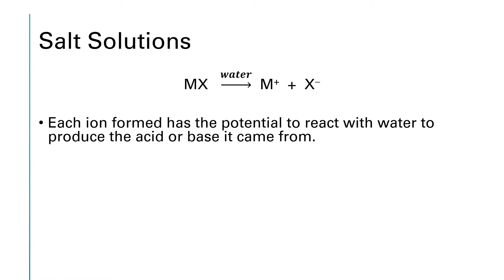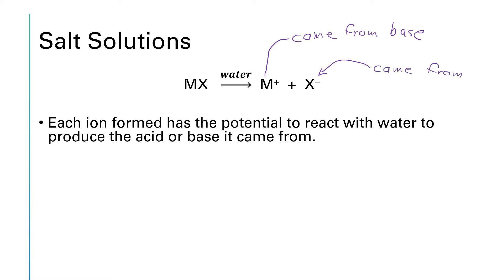Each one of these ions produced — the M⁺ ion and the X⁻ ion — has the potential of reacting with a water molecule, since that's our solvent, to produce the acid or the base that it came from. The cation in a salt came from the base in the acid-base neutralization reaction, and the anion came from the acid. So each ion potentially could react with water to restore the base or the acid it came from.